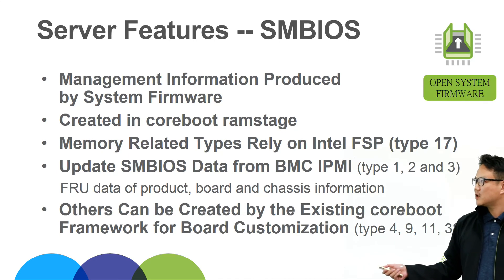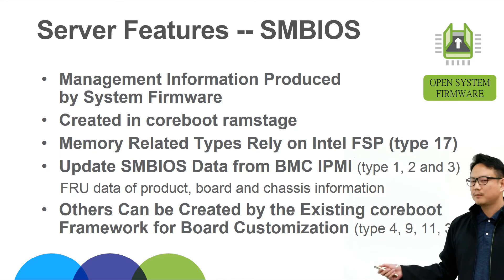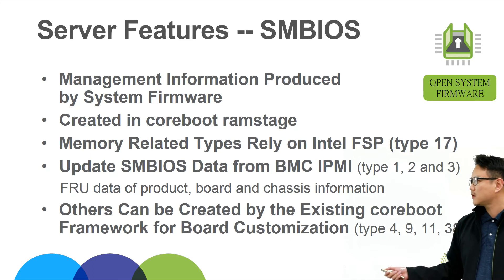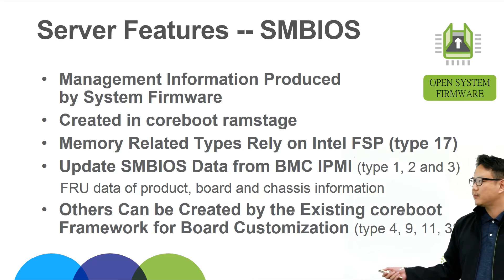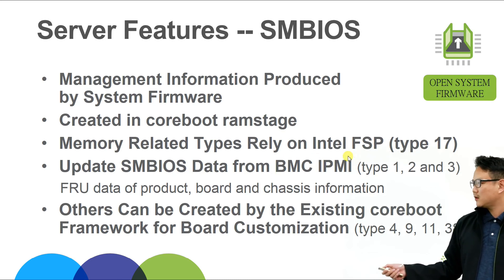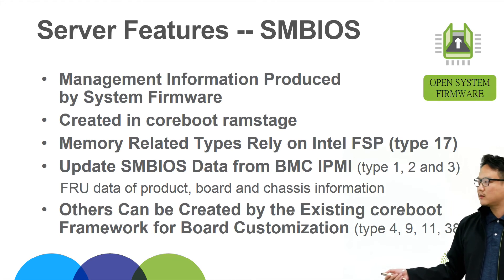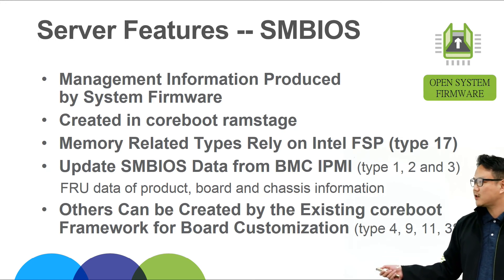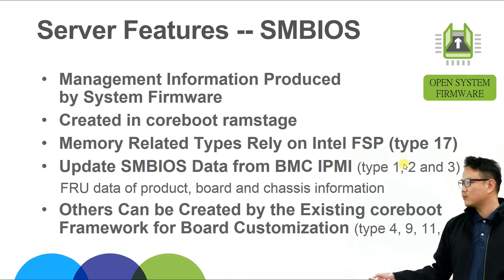SMBIOS, as mentioned before, is a very important server feature. It provides management information from system firmware. It can be created in CoreBoot RAM stage. For memory-related SMBIOS Type 17, it relies on Intel FSP to provide the memory DIMM information. And for updating SMBIOS data from BMC IPMI, we need to read the correct product, board, and chassis information from BMC through FRU, and then we can update them to SMBIOS Type 1, 2, and 3. You can check the previous slides for implementation details. Other SMBIOS tables can be created by the existing CoreBoot framework for your customization.